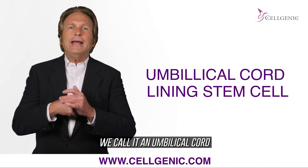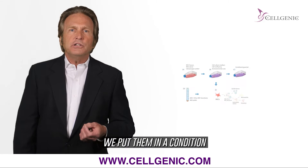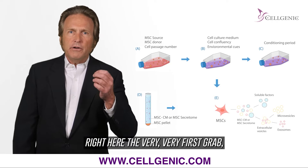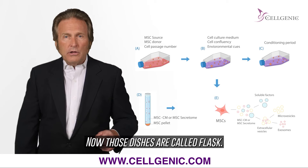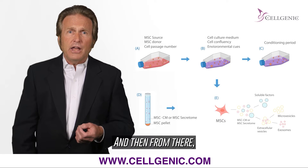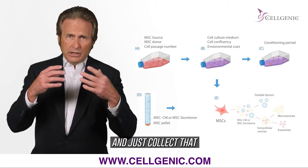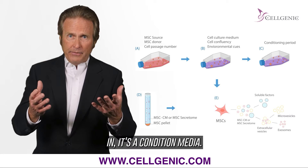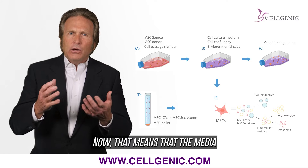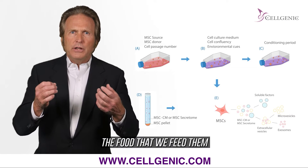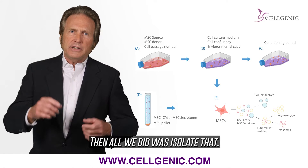In our case, we call it an umbilical cord lining stem cell. From there, we put them in a condition — the very first grab, the stuff on top of those Petri dishes, which we call flasks. If we take just the very top portion and collect that while we're growing it, that's a conditioned media. The media were conditioned — the food we feed them was conditioned by these cells — and then we isolate that.